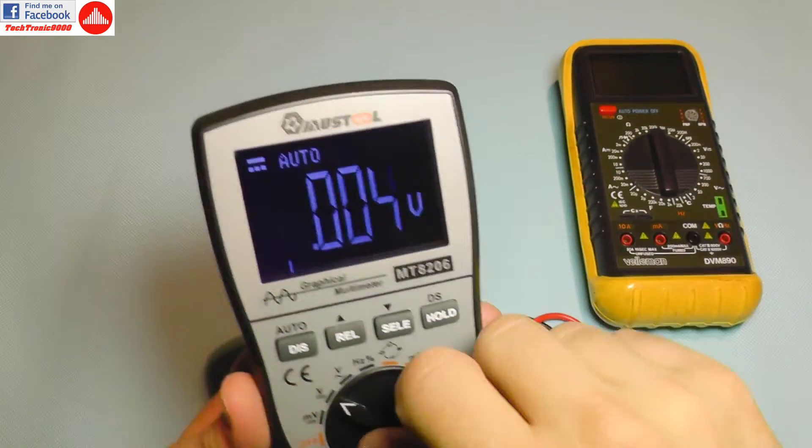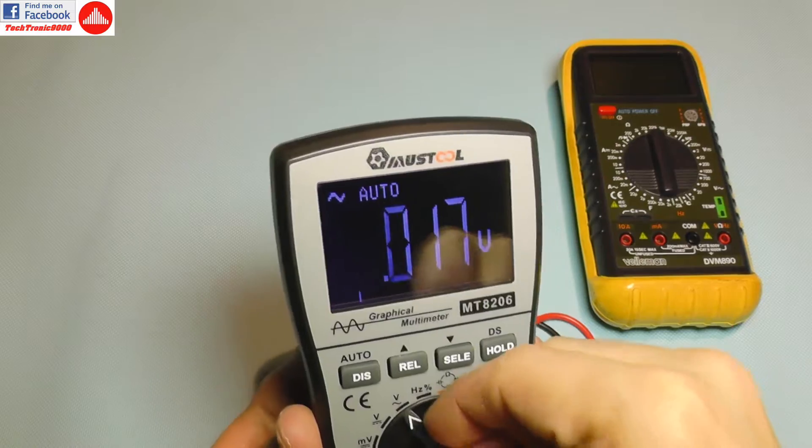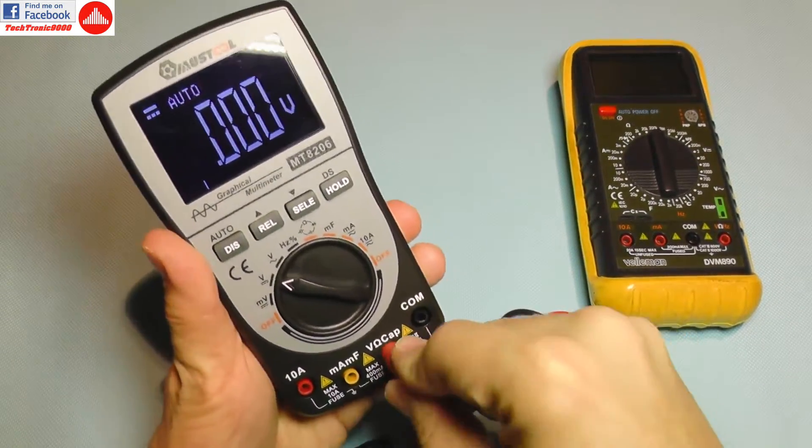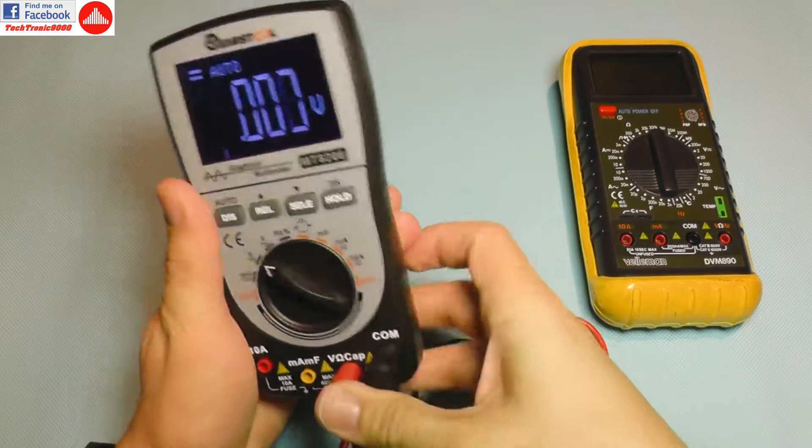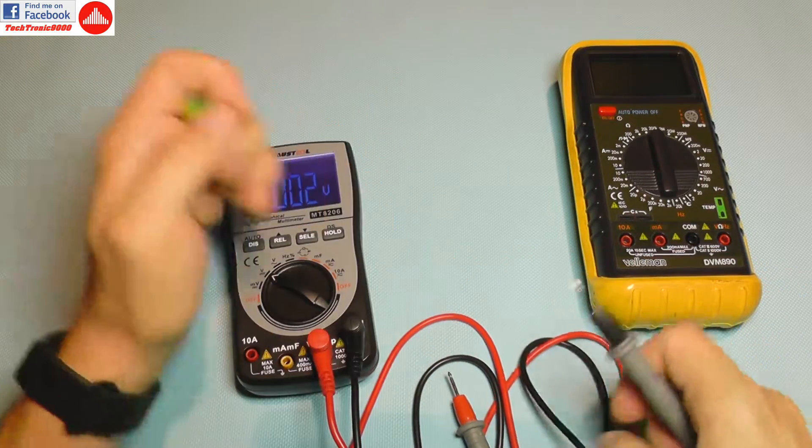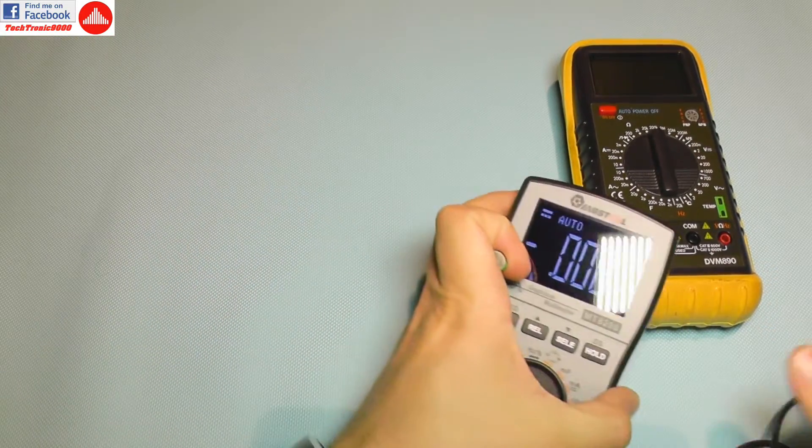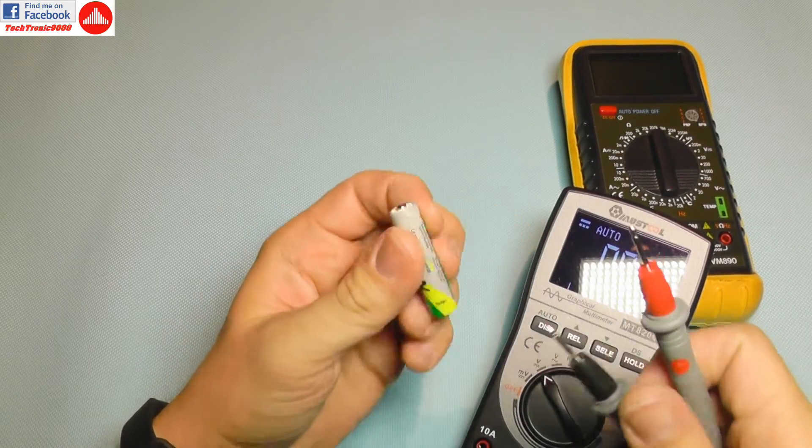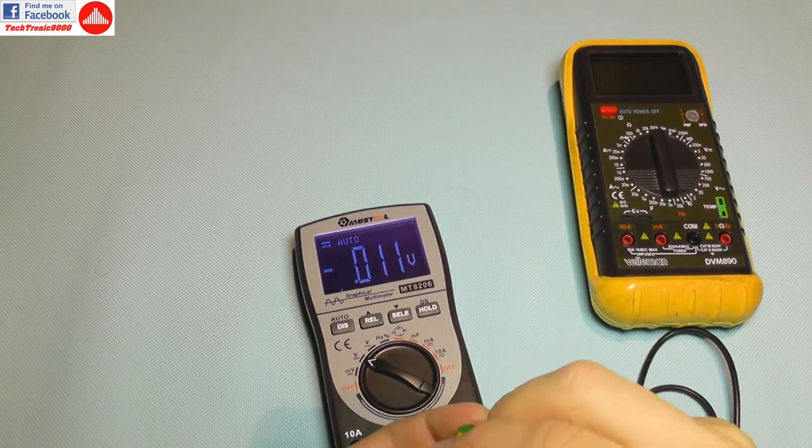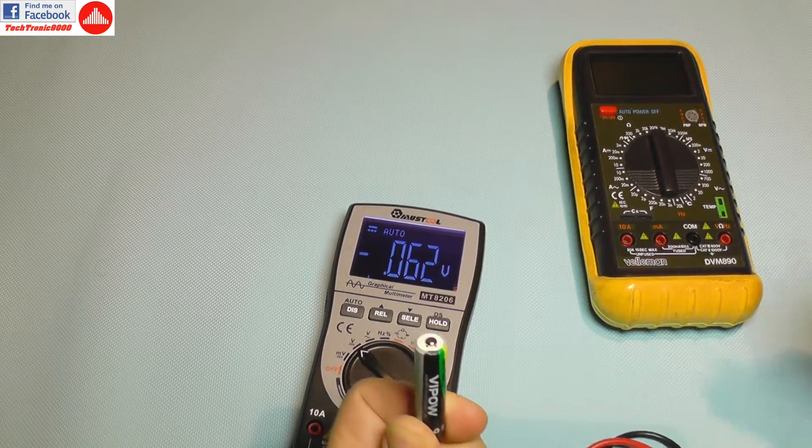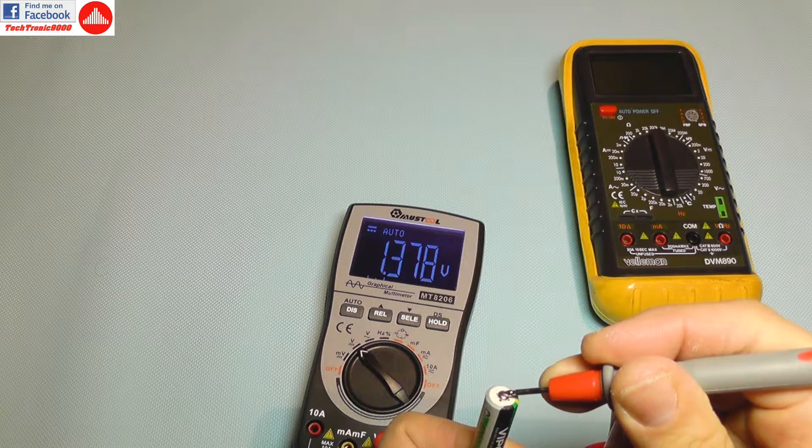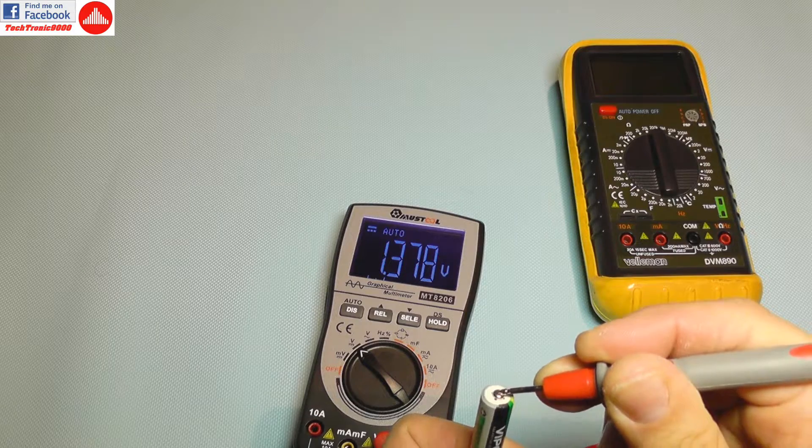I'm going to select voltage for DC and I'm going to install my probes, test leads. I'm going to use a small battery like this one, a rechargeable battery, just for a test so we are going to see its voltage. There you go, it has 1.378 volts. This is a rechargeable battery so it's in the normal range.